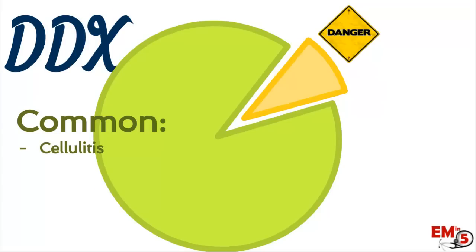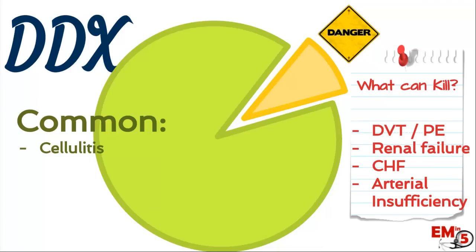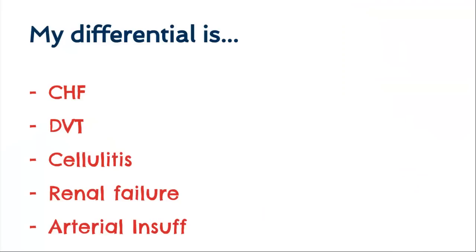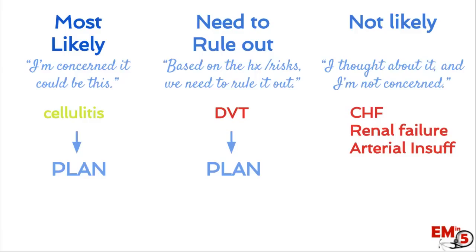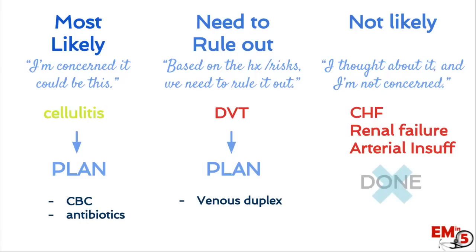On our differential, cellulitis is pretty common. On the 'what can kill' list, we have to consider DVT, renal failure, CHF, and arterial insufficiency. Sorting into three columns: most likely is cellulitis; need to rule out is DVT; and not as likely are CHF, renal failure, and arterial insufficiency. For cellulitis, we should get a CBC and start antibiotics. For DVT, we can get a venous duplex. For the not as likely category, as long as we did a good H&P, we don't have to do any further workup. We've addressed everything on the 'what can kill' list.